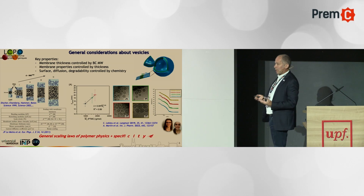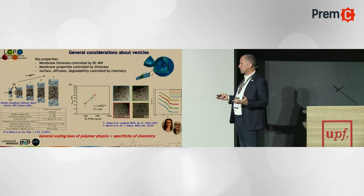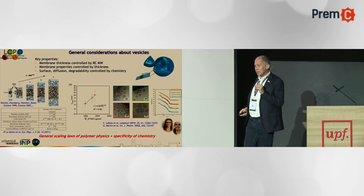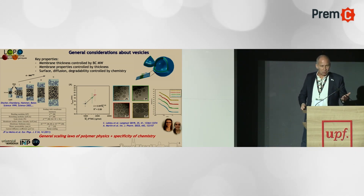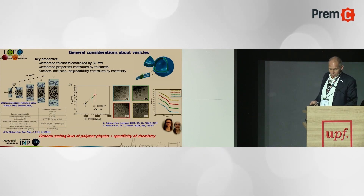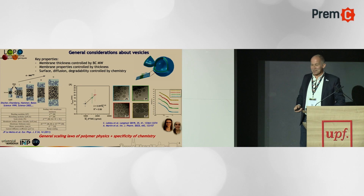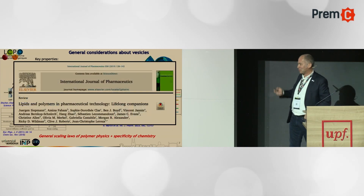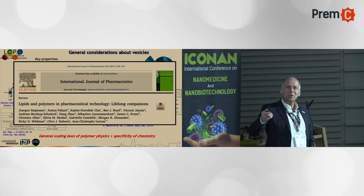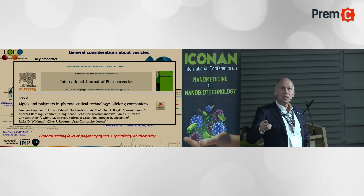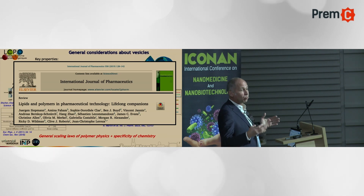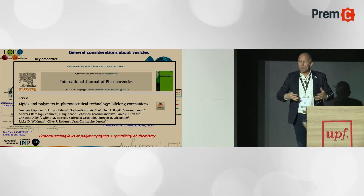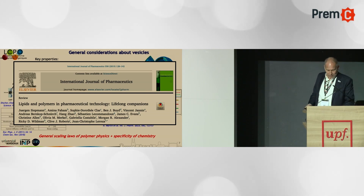The cool thing is that you can play with polymer physics and general scaling laws, plus the specificity of chemistry, because you can take the polymer with the right building blocks and composition to have specific interaction, recognition, and degradation in a very accurate manner. I don't want to say polymersomes are better than liposomes — lipids and polymers are working together. Polymer vesicles really extend the range of possible properties that you don't have with liposomes, giving more flexibility to tune and design the system.